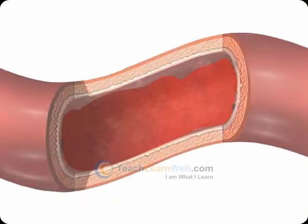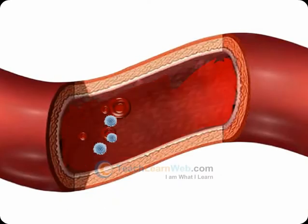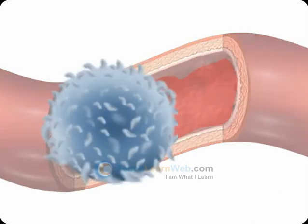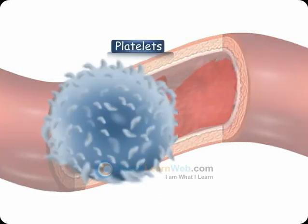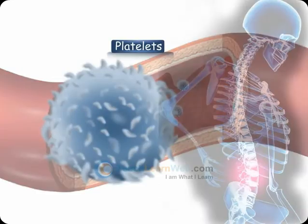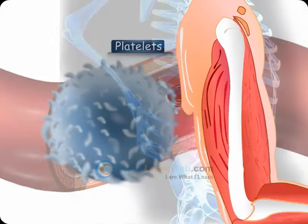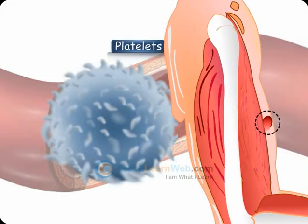Our blood contains clotting factors called platelets. These platelets flow to an injury site immediately and help in the formation of a clot.